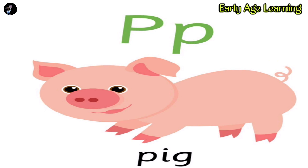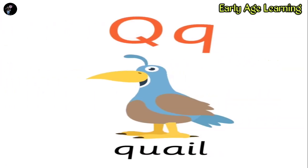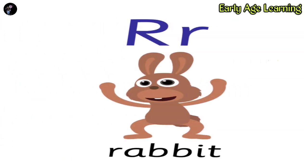P. P for pig. P-I-G. Pig. Q. Q for quail. Q-U-A-I-L. Quail. R. R for rabbit. R-A-B-B-I-T. Rabbit.